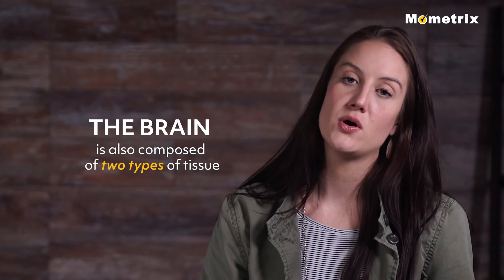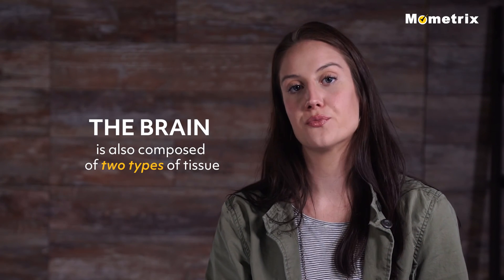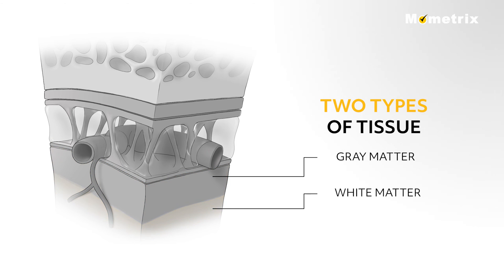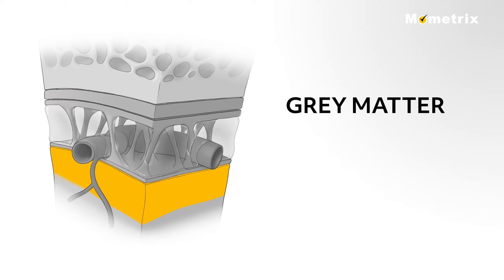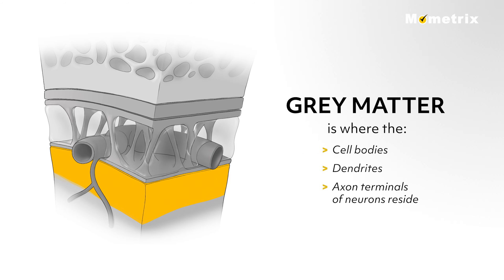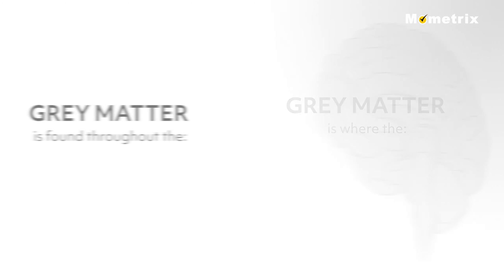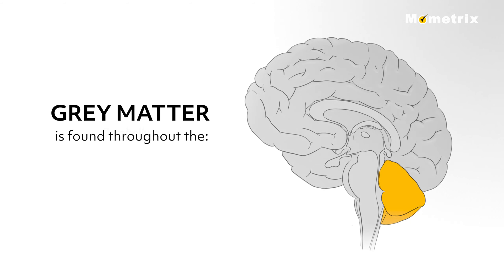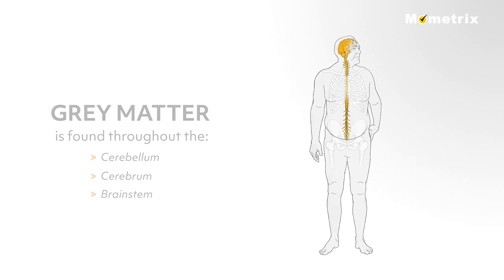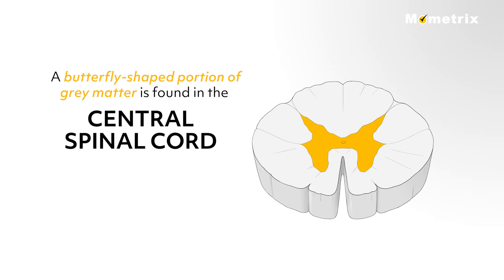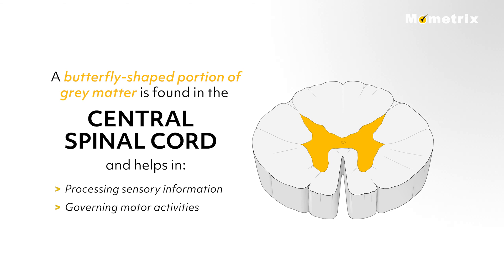The brain is also composed of two types of tissue: gray matter and white matter. The gray matter, named for its pinkish-gray color, is where the cell bodies, dendrites, and axon terminals of neurons reside. This is the area where the synapses between neurons occur. This tissue is found throughout the cerebellum, cerebrum, and the brainstem. A butterfly-shaped portion of gray matter is found in the central spinal cord and helps in processing sensory information and governing motor activities.